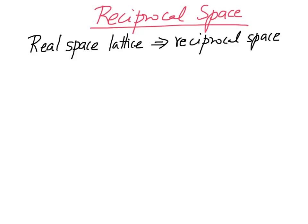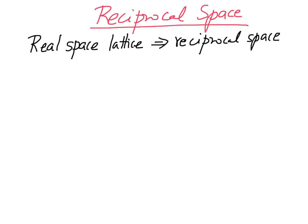So, for simplicity, let us consider a 1D lattice, a one-dimensional lattice with a lattice constant a. And we are going to look at the charge density of this one-dimensional system. The red dots represent our lattice points arranged in a one-dimensional space. And a is the lattice parameter. And the blue curves represent the charge density of the system.